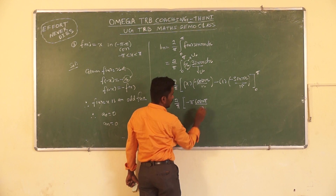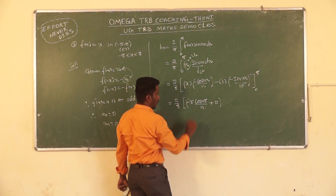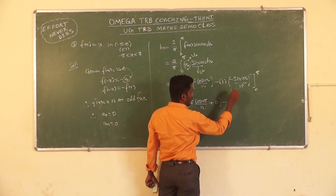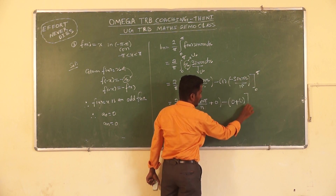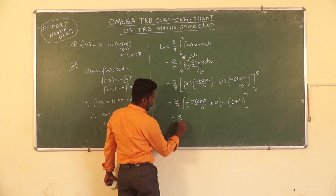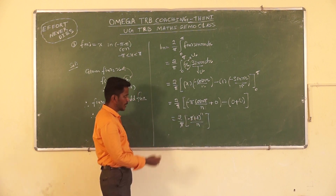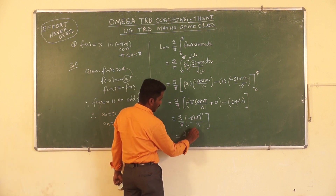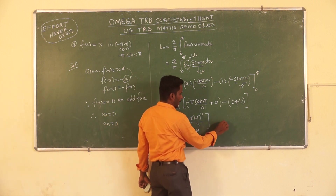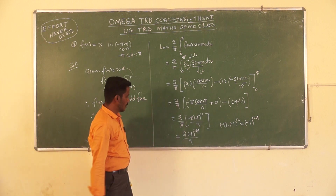Evaluating at the upper limit π: −π·cos(nπ)/n + sin(nπ)/n², and sin(nπ) = 0. At the lower limit 0: x = 0 gives 0, and sin(0) = 0. So (2/π) × [upper limit − lower limit] = (2/π) × [−π·cos(nπ)/n]. Since cos(nπ) = (−1)^n, this becomes 2·(−1)^(n+1)/n.